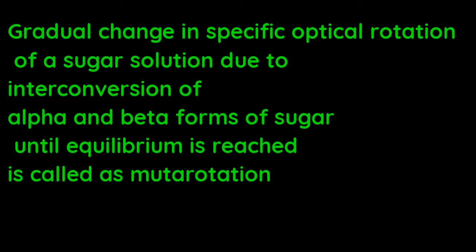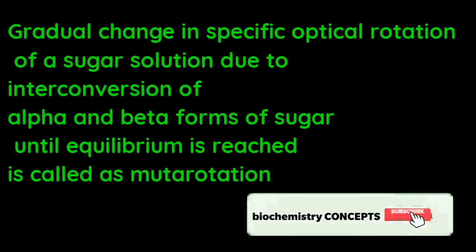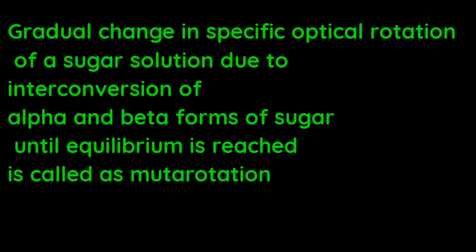Coming to definition, gradual change in specific optical rotation of sugar solution due to interconversion of alpha and beta forms of sugar until equilibrium is reached is called as mutarotation. That means, whenever alpha and beta forms of sugar in a solution are interconverting, that interconversion results in the change in the rotation of light which is passed through that solution.